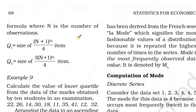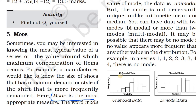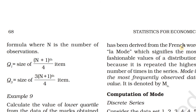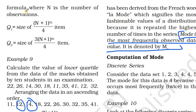Next, we can study about mode. What is mode? Mode is the most frequently observed data value. It means which number is repeating more times — that one is the mode. Mode is denoted by M0.